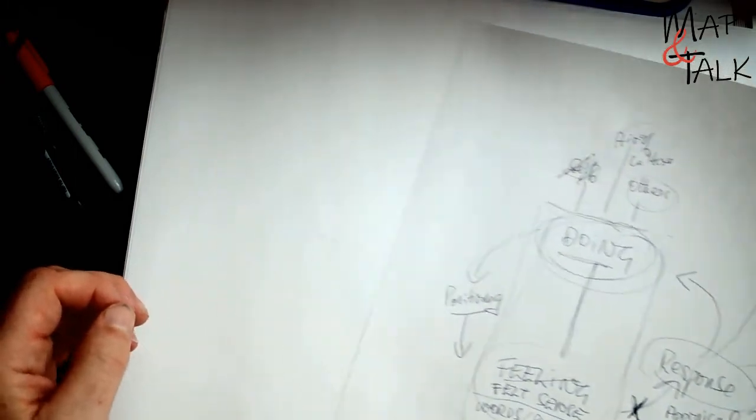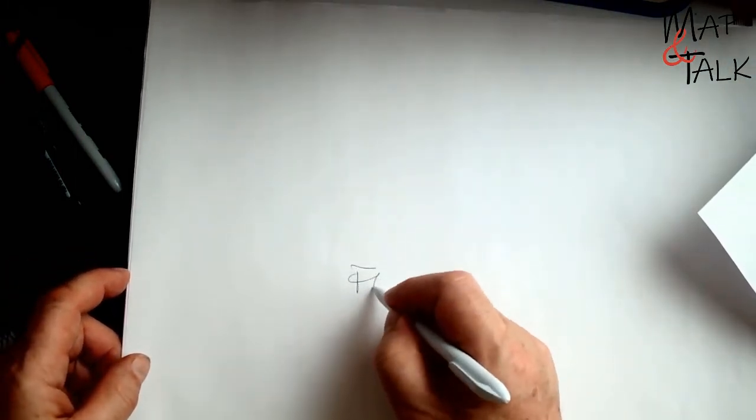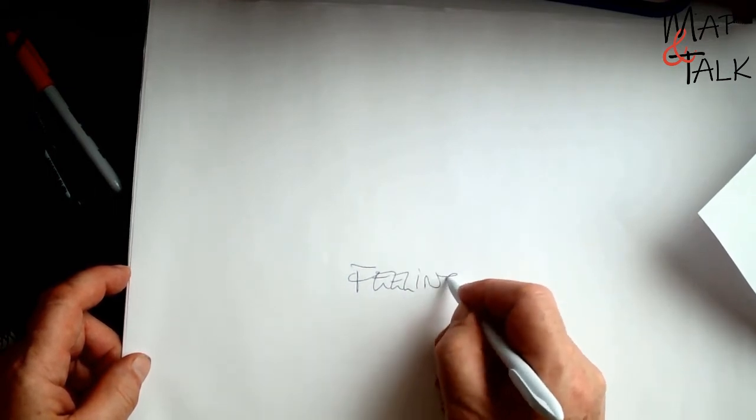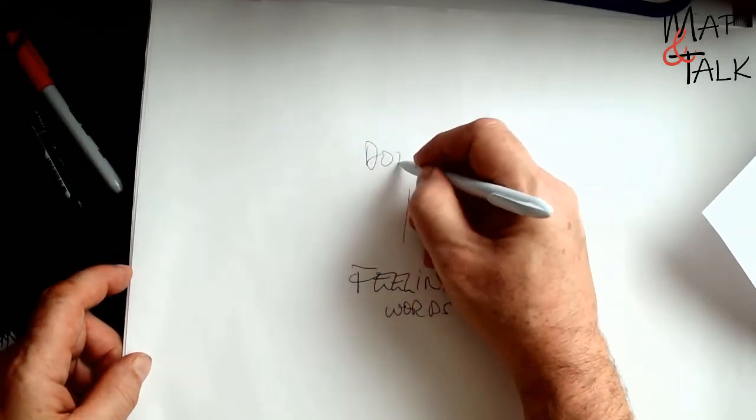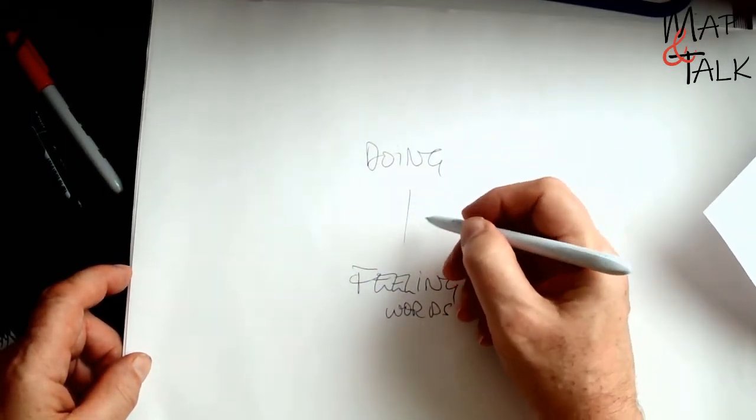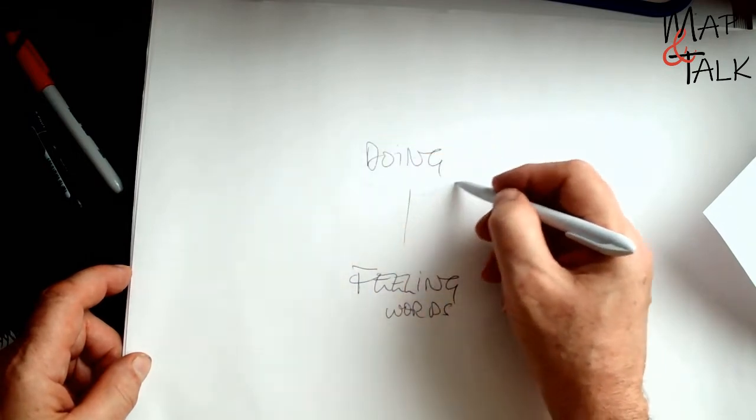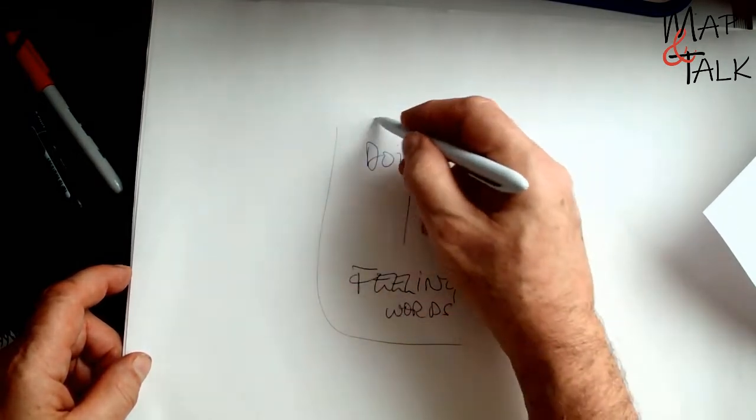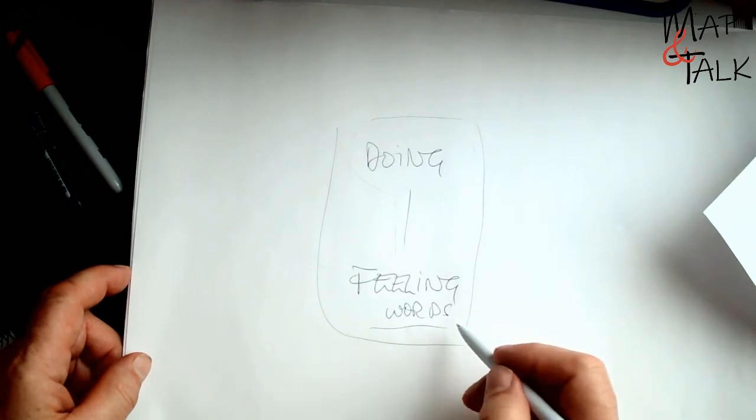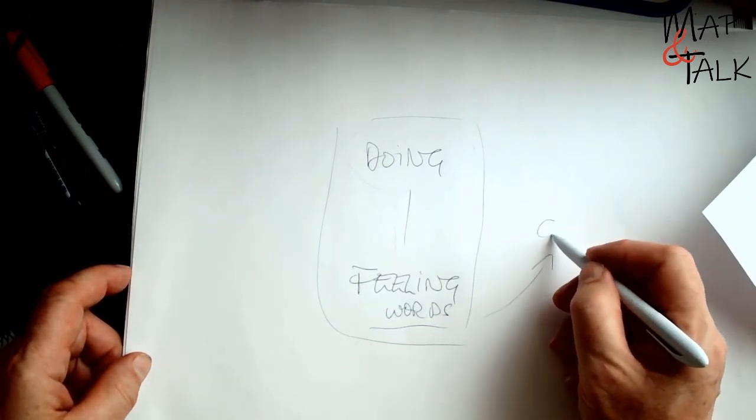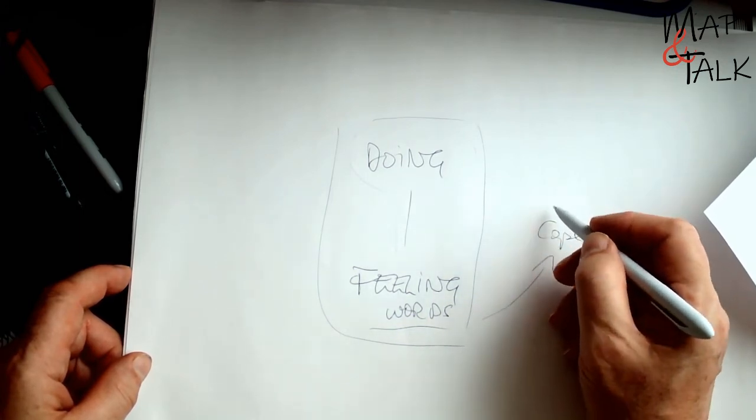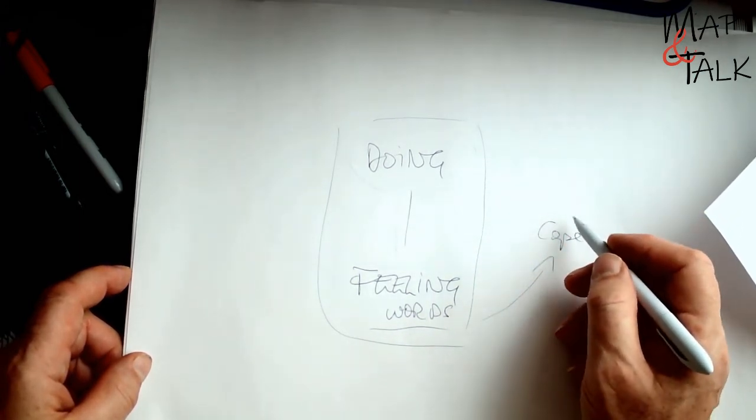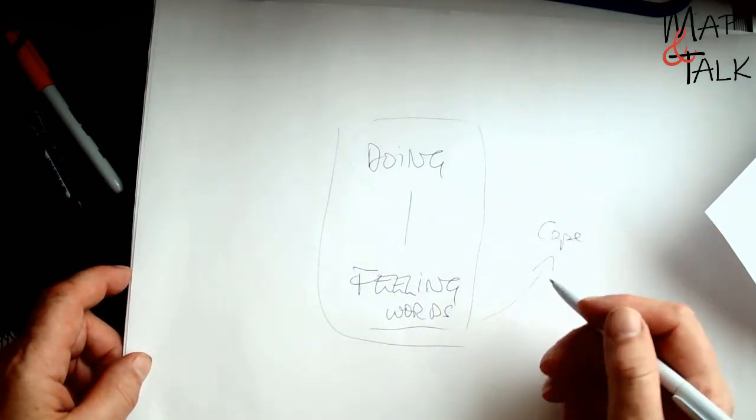We start mapping by listening for feeling words. And the minute we start getting feeling words down, we begin to wonder about the goings-on, the doings. We're bringing the past into the present tense to make it immediate, to make it alive in the present. We have the feeling words and then we're interested in the coping - coping in myself and coping with others or with the world around me through identity, through role.